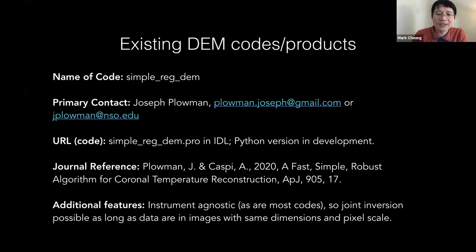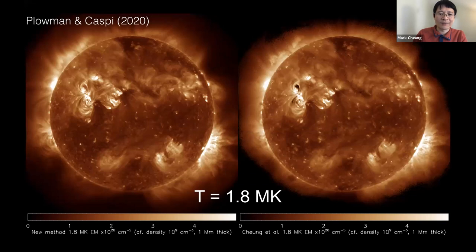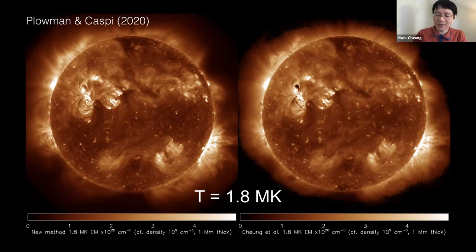A new code published last year from Plowman and Caspi, called Simple Regularized DEM, is quite fast — and notably very concise, with the core fitting on half a page of code in the paper. A Python version is in development. They compared results at one megakelvin against the AIA team's DEM code, and it appears to be slightly less biased in low signal-to-noise regions above the limb, where the sparse DEM code tends to prefer low emission measure solutions.